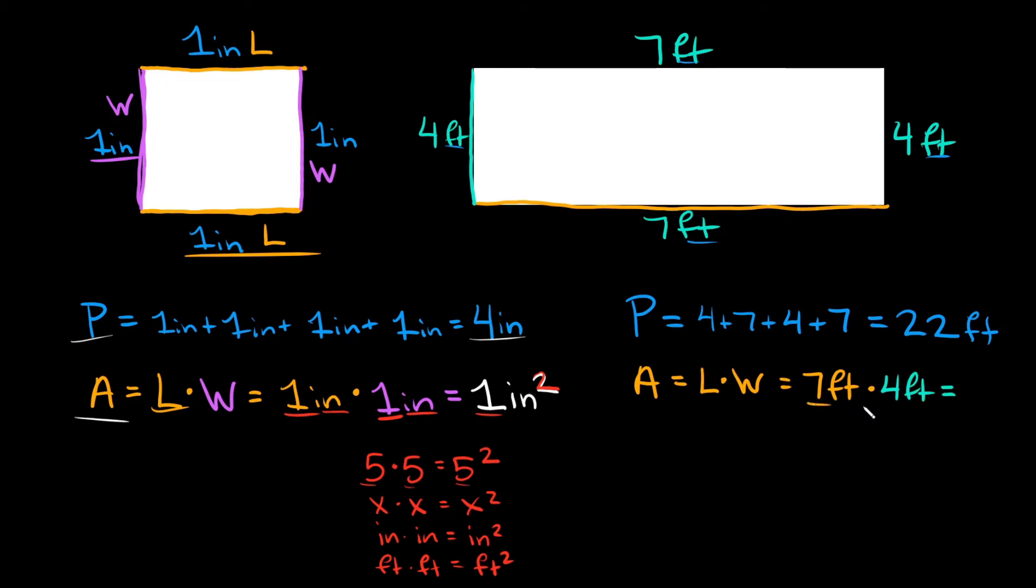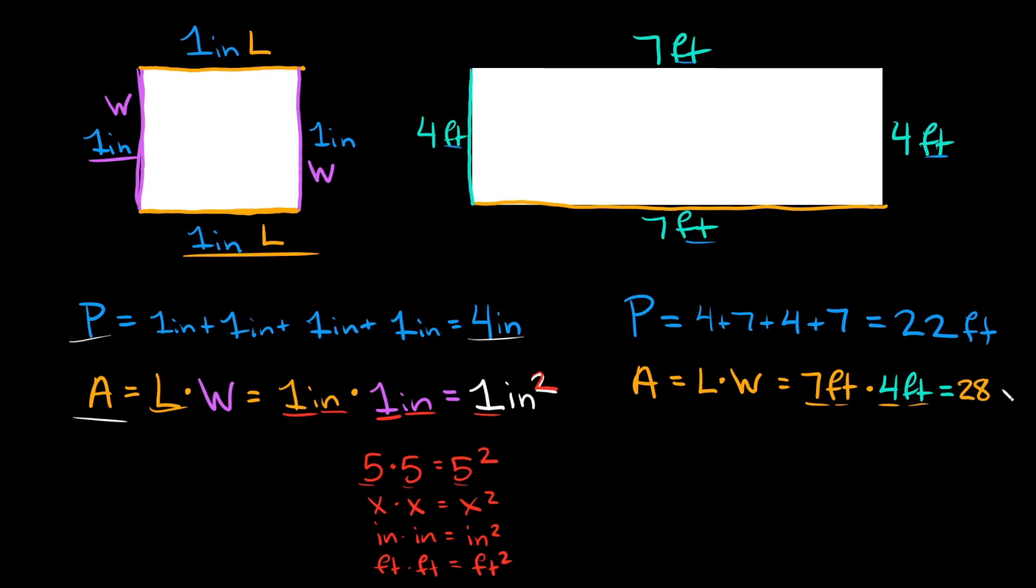So what's 7 times 4? That's 28. And then what's feet times feet? That would be feet squared.